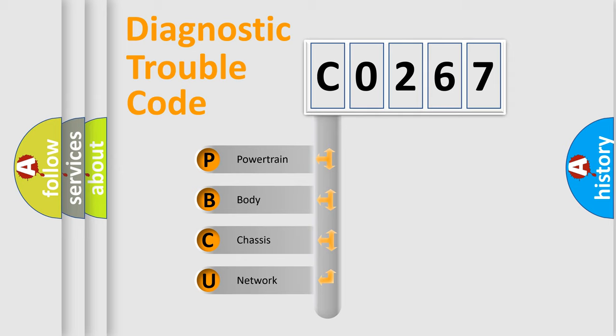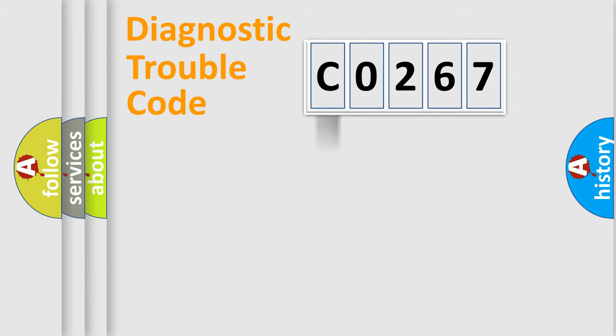We divide the electric system of automobile into four basic units: Powertrain, Body, Chassis, and Network. This distribution is defined in the first character code.